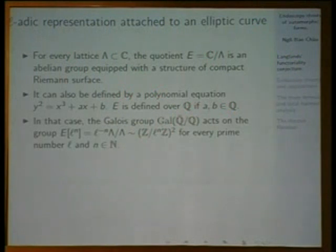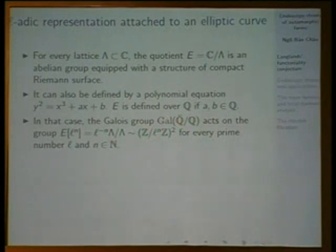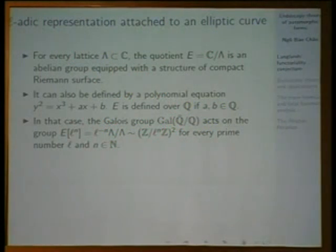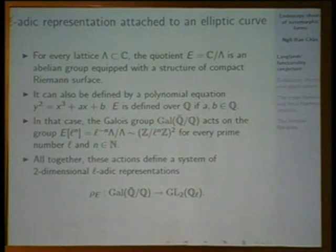In that case, the Galois group — the transformations of the algebraic closure Q-bar — acts on the finite group of l-to-the-n torsion points of the elliptic curve, for every prime number l and for every integer n. This group of torsion points can be described as l-to-the-n of lambda mod lambda. The action of the Galois group on this group is very interesting. Altogether, this action forms a system of two-dimensional l-adic representations of the Galois group, and this representation encodes almost all arithmetic information about the elliptic curve.